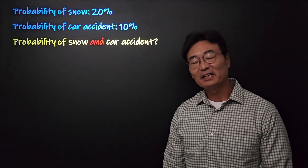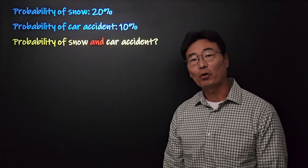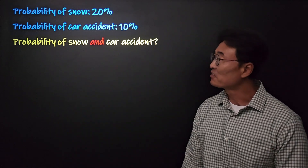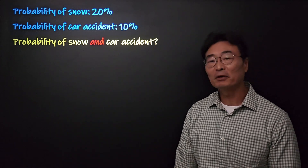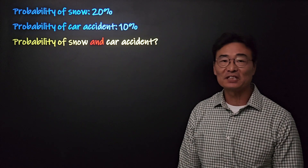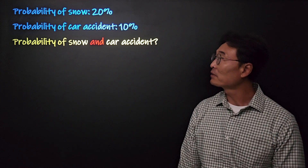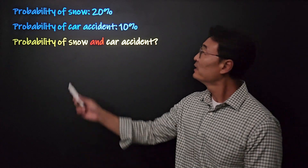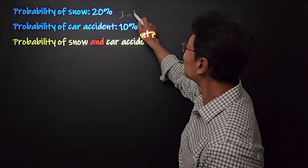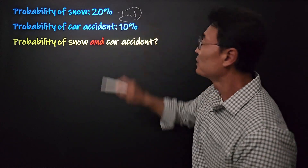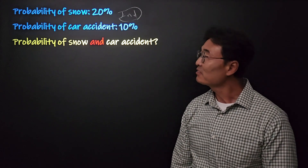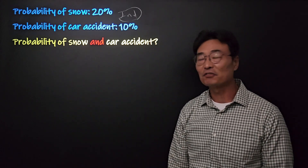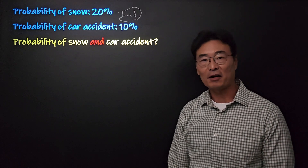Let's go through this basic yet very important probability question. We have an example where the probability of snow is 20% and the probability of a car accident is 10%. They are independent of each other. The question asks: what is the probability of snow and car accident on the same day?